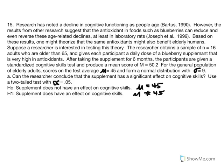Number 15: research has noted a decline in cognitive functioning as people age. However, results from other research suggest that antioxidants in foods such as blueberries can reduce and even reverse these age-related declines, at least in laboratory rats. A researcher obtains a sample of 16 adults older than 65 and gives each participant a daily dose of a blueberry supplement high in antioxidants. After six months, participants are given a standardized cognitive test and produce a mean score equal to 50.2.